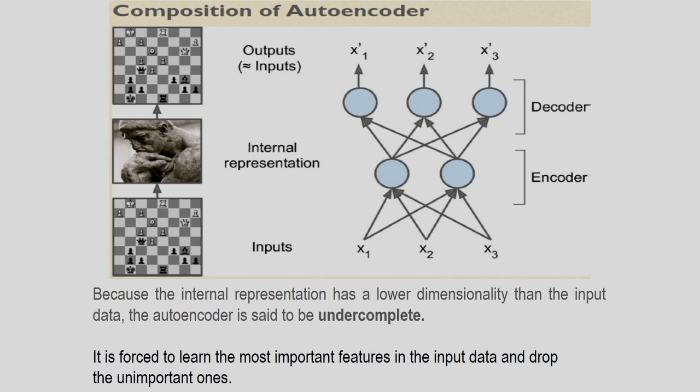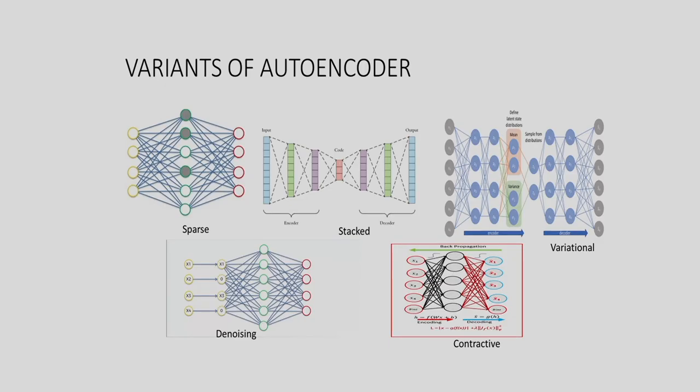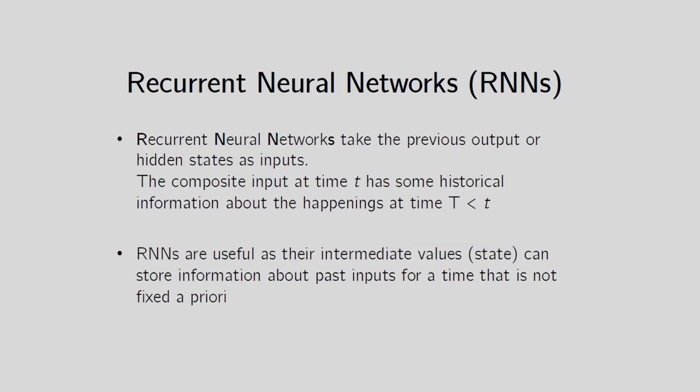There are different variants of autoencoder architectures, though I will not discuss all of them in detail. They include: the sparse autoencoder, stacked autoencoder, variational autoencoder, the popular denoising autoencoder used for denoising operations, and the contractive autoencoder. These are the variants of autoencoder. Next I will discuss the concept of the recurrent neural network.